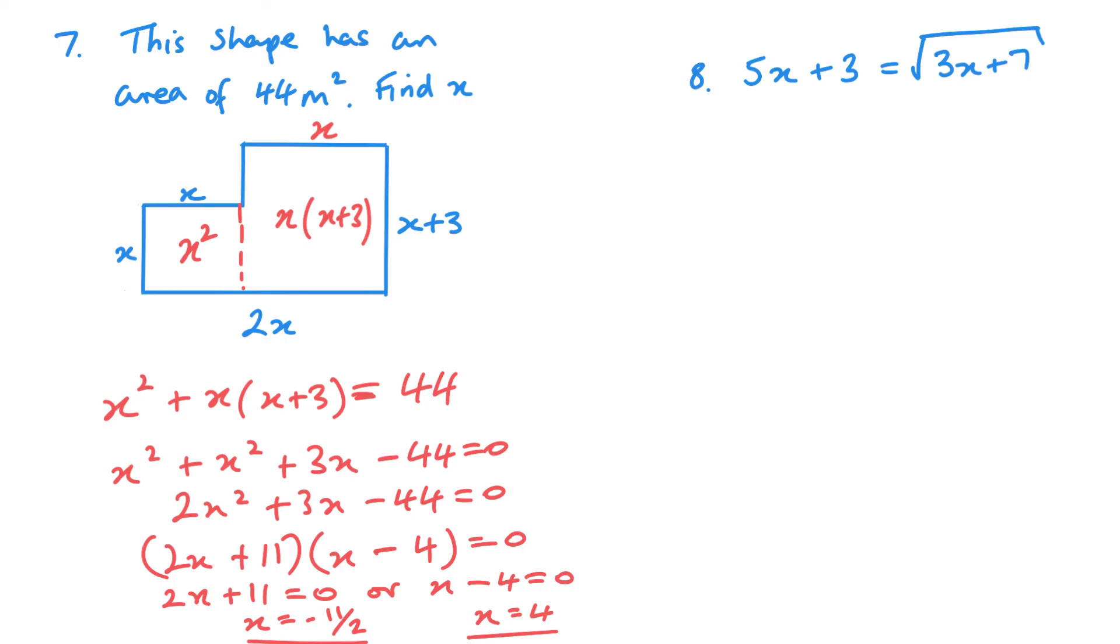Finally, question 8. We want to square both sides. So we have 5x plus 3 squared equals 3x plus 7. Expanding this bracket, square the first, 25x squared, double the product, 3 times 5 is 15, so this is 30x, and square the last plus 9.